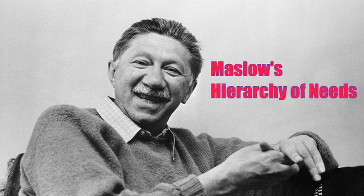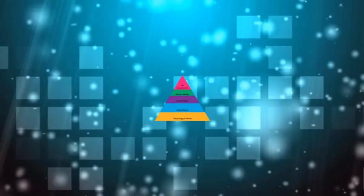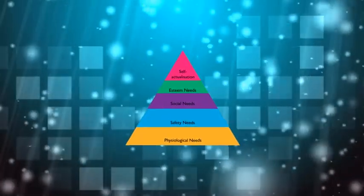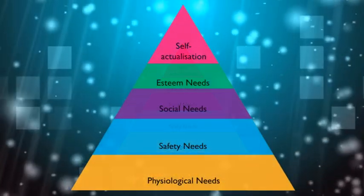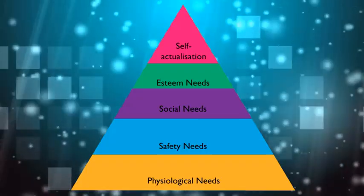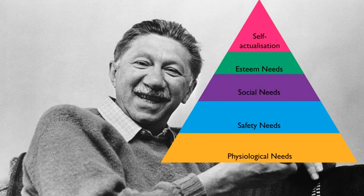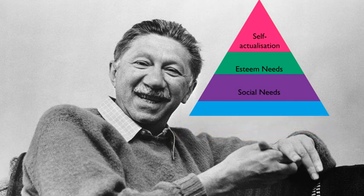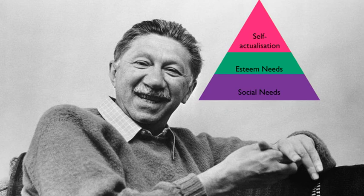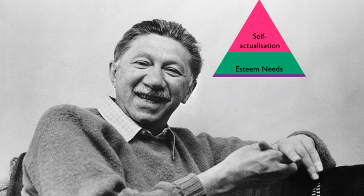It was introduced by an American psychologist, Abraham Maslow. His theory is known as Maslow's Hierarchy of Needs. It is based on human needs and comprises five tier levels of human needs. Once one level of need is fulfilled or satisfied, then you search for another level. Maslow said that we have needs that need to be fulfilled in a specific order, starting from the bottom of the pyramid all the way to the top.